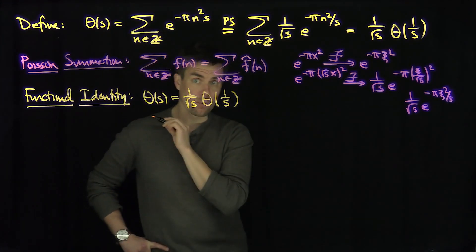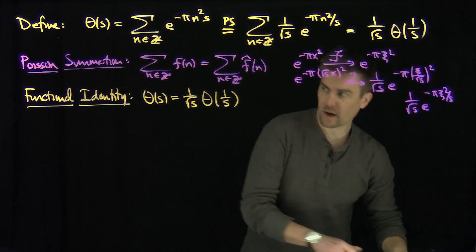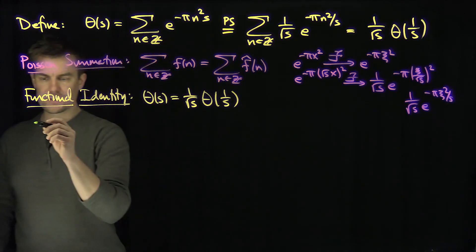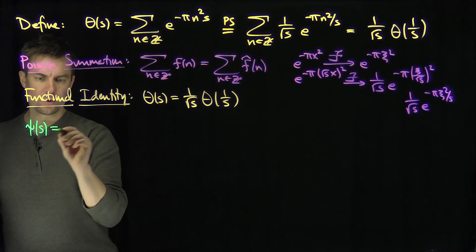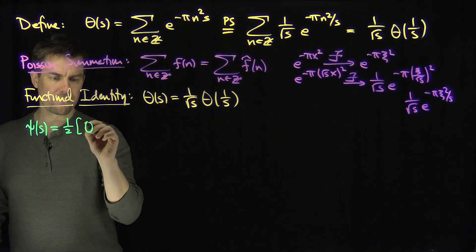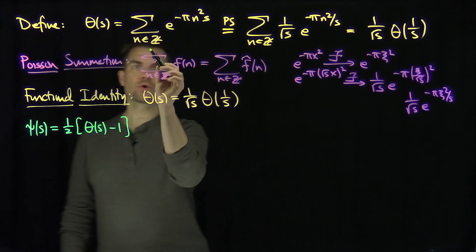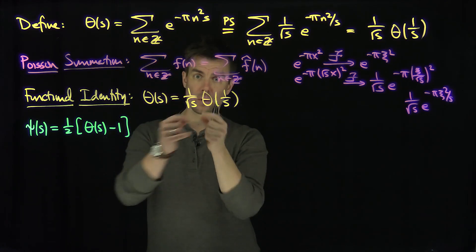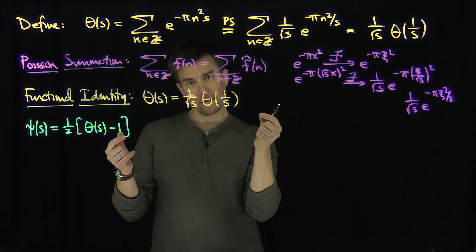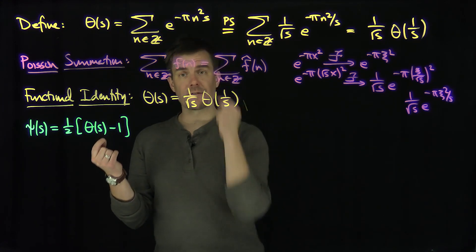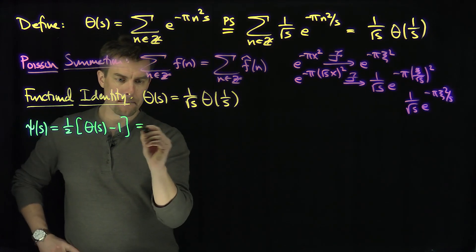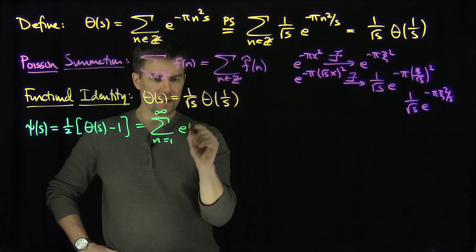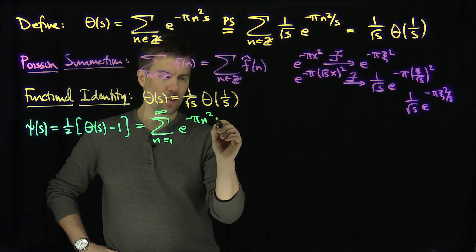This identity plays a very important role in the study of the Riemann zeta function. Now what I want to do is define another function that breaks the symmetry. Consider psi of s, which is 1 half of theta of s minus 1. If I subtract 1 from theta, that eliminates the n=0 term, because when n equals 0 I get a 1. Since every positive term corresponds to a negative term by the evenness of n squared, this is exactly the sum from n equals 1 to infinity of e to the negative pi n squared s.